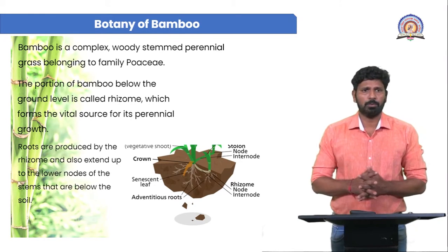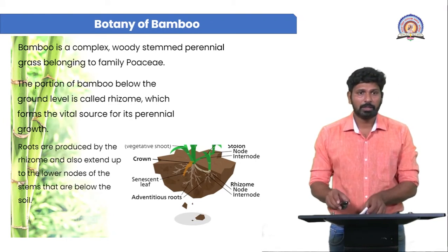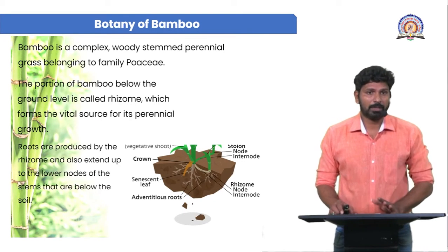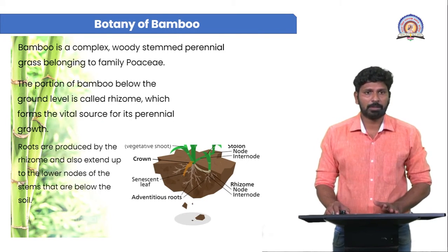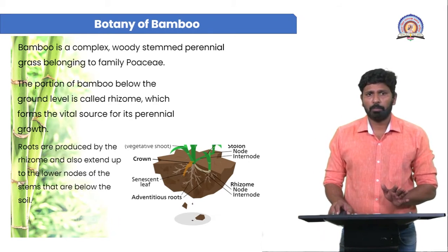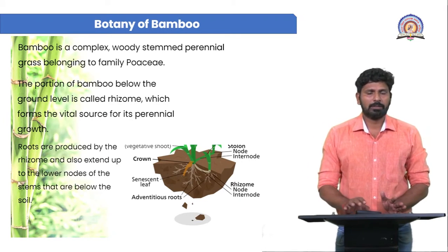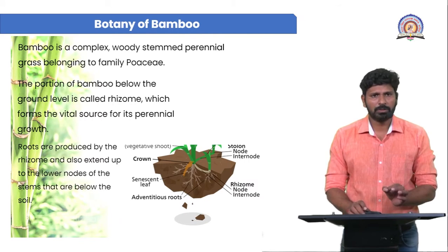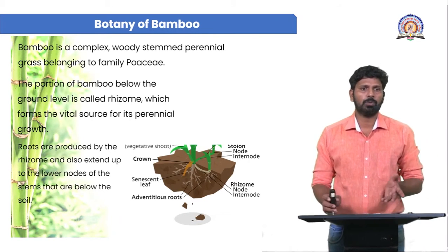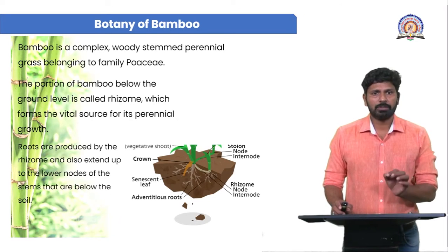After the taxonomy, we move to the Botany of Bamboo. Botany is the systematic study of plants. Bamboo is a complex, woody-stemmed, perennial grass belonging to the family Poaceae. It is quite complex because, as an angiosperm, it is a highly evolved plant having roots, stem, and leaves. The stem is woody and perennial.